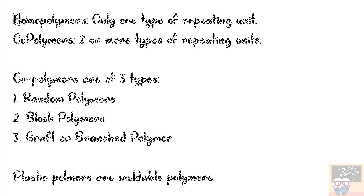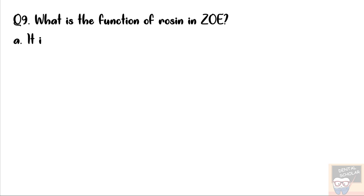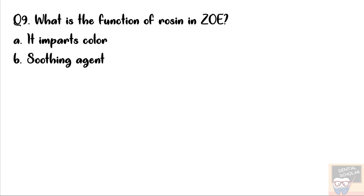Let's now go to question number 9. What is the function of rosin in zinc oxide eugenol? The options are: it imparts color, soothing agent, accelerator, and improves flow.